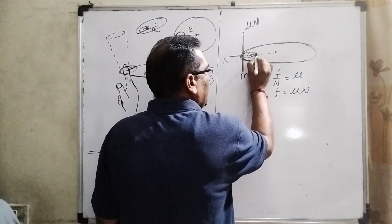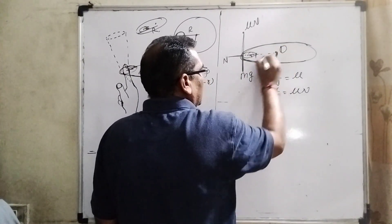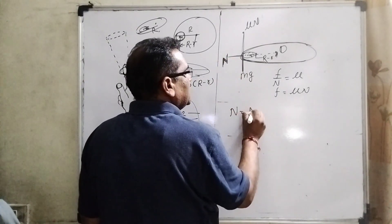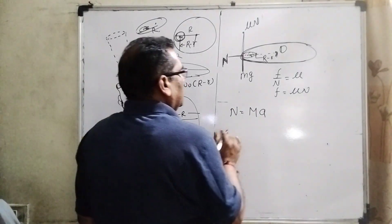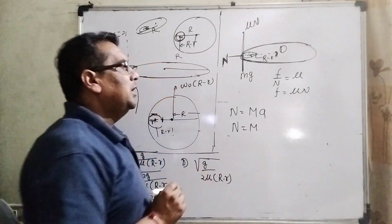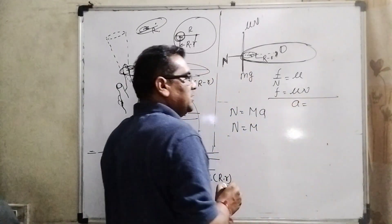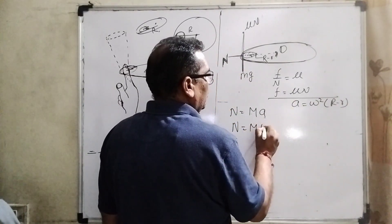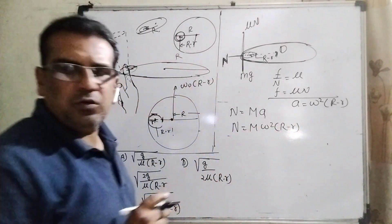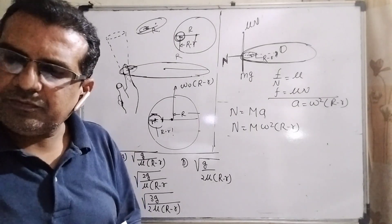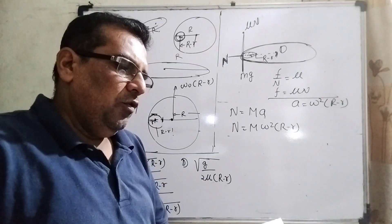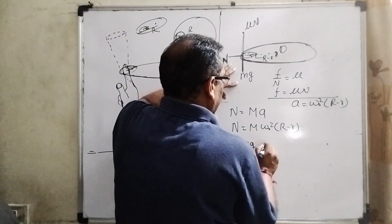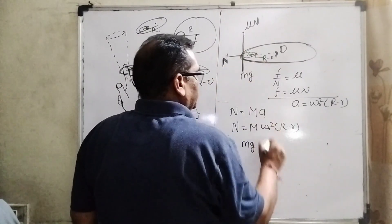The finger makes a small circular path of radius r; the remaining distance from the center of the ring to the contact point is (R − r). The normal force provides the centripetal force: N = Mω₀²(R − r). For the ring not to drop, the friction force must support the weight: Mg ≤ μN, that is, Mg ≤ μMω₀²(R − r).